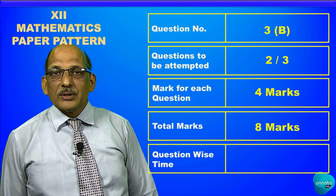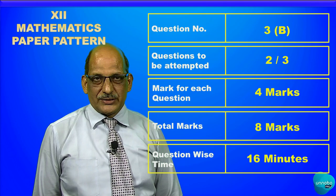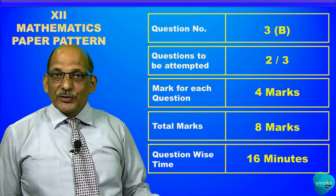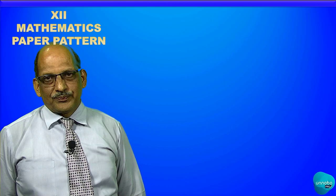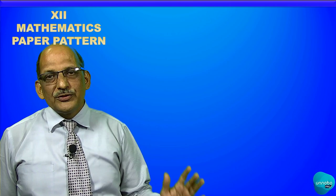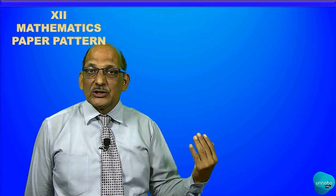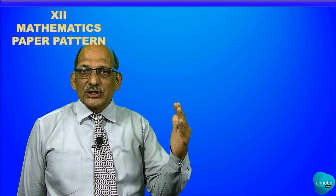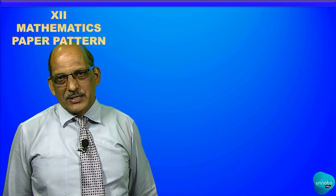Total marks for question number 3B are eight marks, which students have to complete in 16 minutes. Now, question number four will come in Section 2. While writing the paper, Section 1 and Section 2 have to be solved on separate answer sheets.